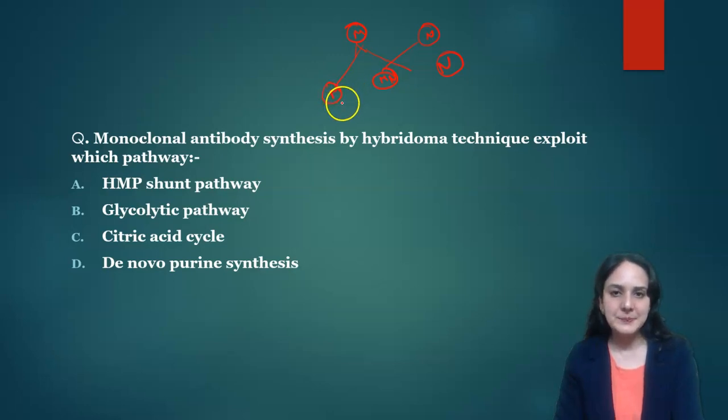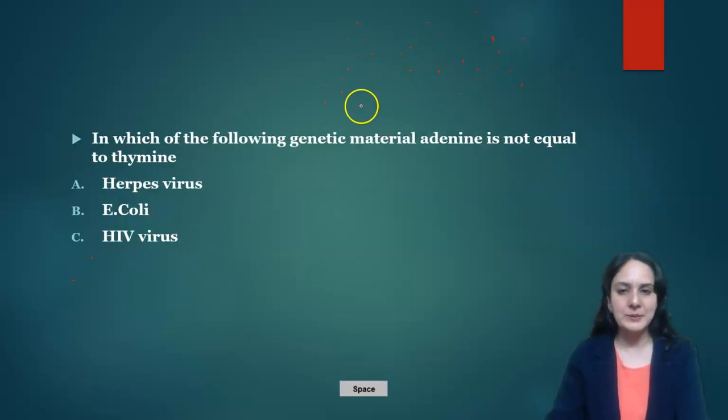We add them into HAT medium, that is hypoxanthine, aminopterin and thymidine medium. So normal cells will die after some time and myeloma cells will also die because aminopterin will inhibit the de novo purine synthesis. Whereas only these hybrid cells will survive. So the answer is de novo purine synthesis. This mechanism exploits de novo purine synthesis to get cells which are mixture of myeloma and normal cells.